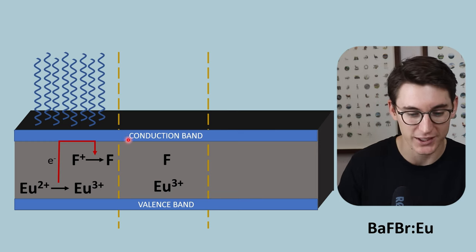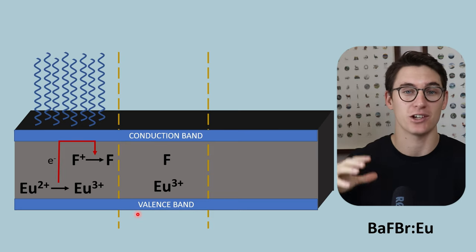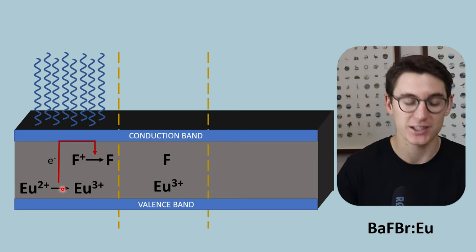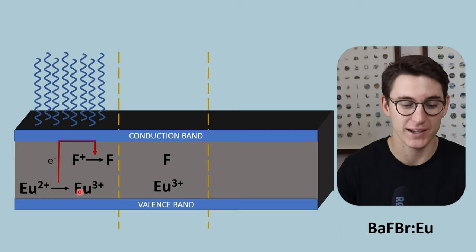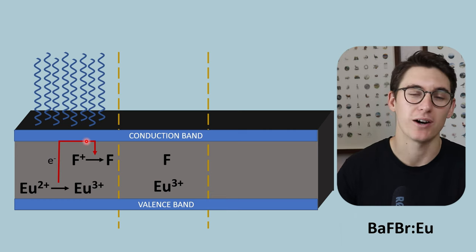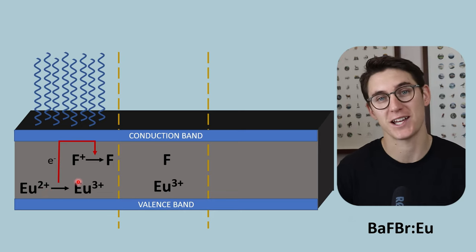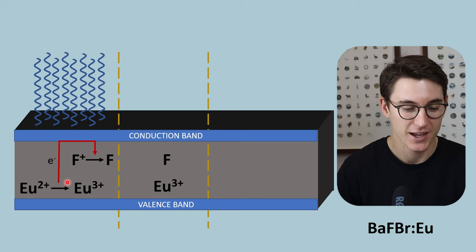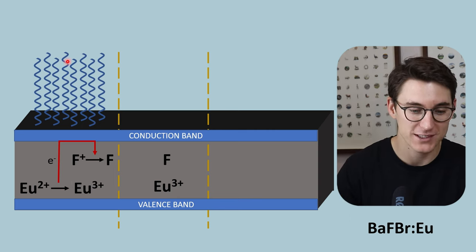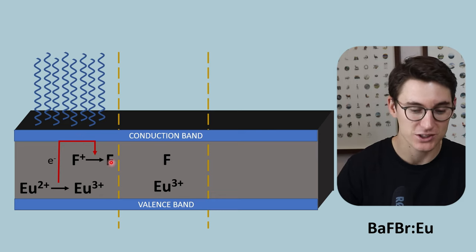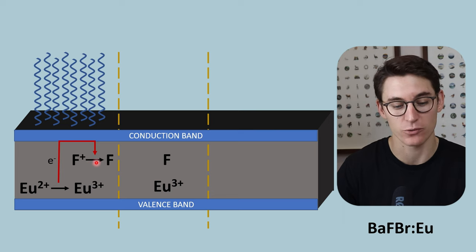When we expose this cassette to x-rays, energy is put into the system and electrons from our valence band are released to our conduction band. That release of electrons causes europium 2+ to be oxidized to europium 3+ — it has lost an electron. Oxidation is loss of an electron. That electron, which has gained energy from the x-rays, goes to the conduction band and falls into the F-centers — the positively charged fluoride atom has now gained an electron and been reduced.